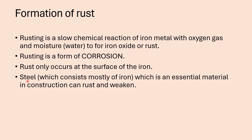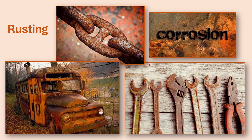Steel, which mostly consists of iron, is used as an essential material in construction — like window frames, buildings, and car bodies. If this rusts, the metal gets a brownish layer and is weakened. Here are a few photographs of what rusting looks like: a chain that is rusted, an old bus that is rusted where the metal becomes really brittle, and even on tools you can sometimes see rust forming.